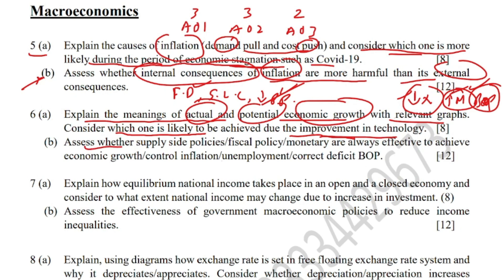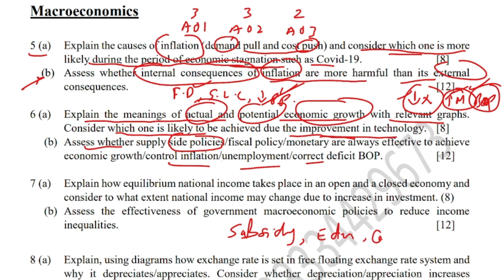Moving to Part B: assess whether supply-side policies, fiscal policies, or monetary policies are always effective to achieve economic growth, control inflation, unemployment, or correct balance of payments. The examiner will pick only one policy and one objective. Supply-side policies are government policies that manipulate aggregate supply to achieve macroeconomic objectives. Examples include subsidies, education and training of workers, and capital expenditure on long-term projects.